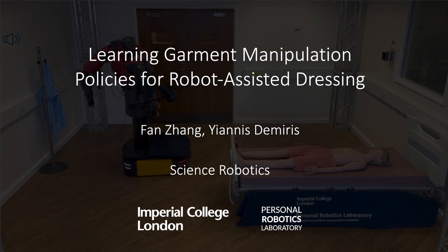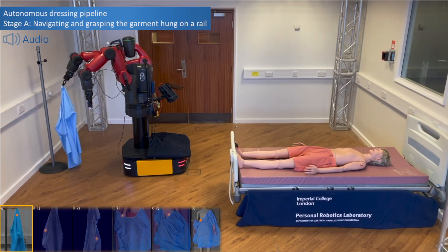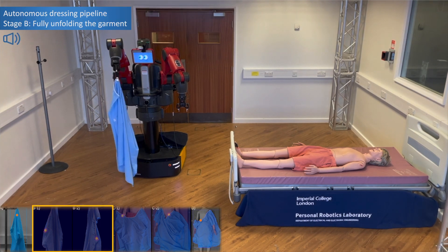In this work, we develop a dressing pipeline intended for people who have completely lost their upper limb movement functionality. The pipeline is comprised of four stages.